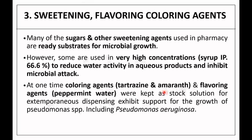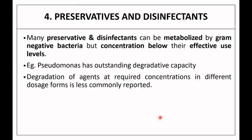Colouring agents like tartrazine and amaranth, and flavouring agents like peppermint, when kept as stock solutions for extemporaneous dispensing, can support growth of Pseudomonas species including Pseudomonas aeruginosa. Preservatives and disinfectants are agents which inhibit the growth of microorganisms, but if their concentration is below the minimum inhibitory concentration, they can themselves be metabolized by gram-negative bacteria like Pseudomonas species.